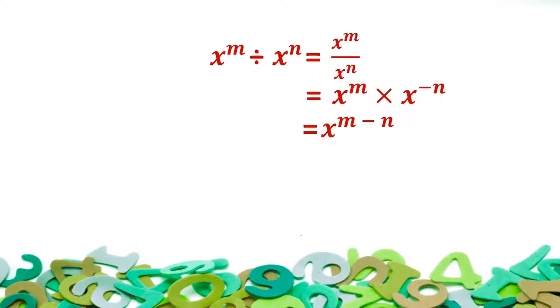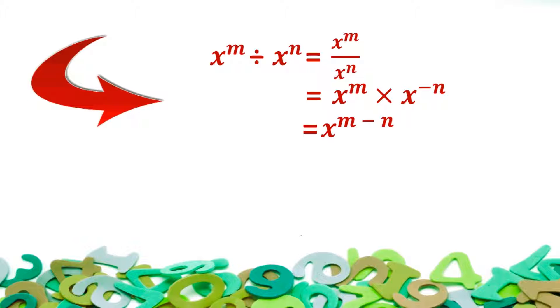Law 4 states: if two terms with the same base are under division, then their powers get subtracted. That is, x raised to power m divided by x raised to power n is equal to x raised to power m into x raised to power negative n, which is equal to x raised to power m minus n.